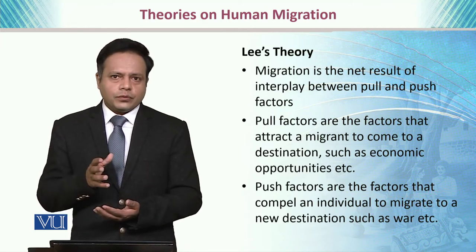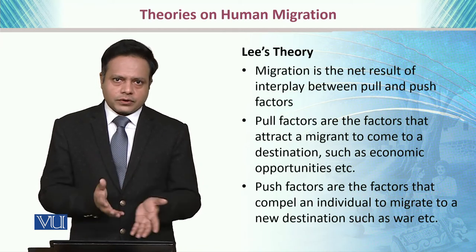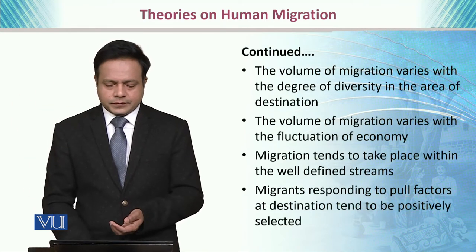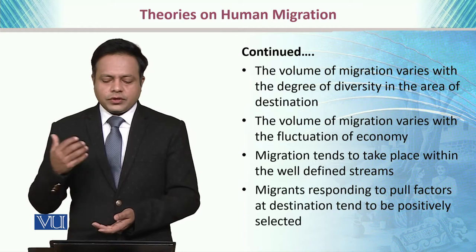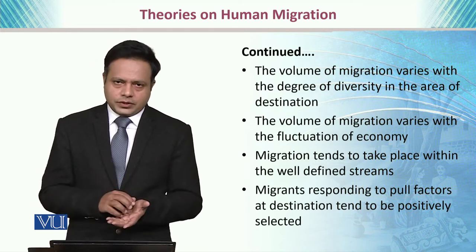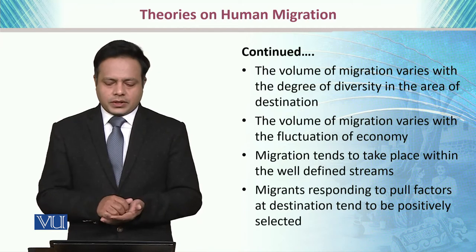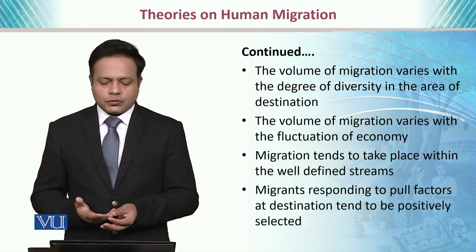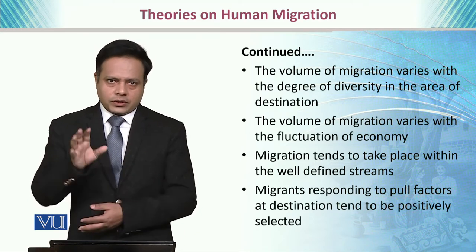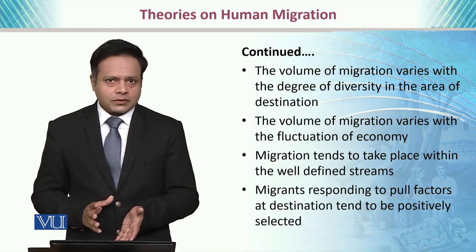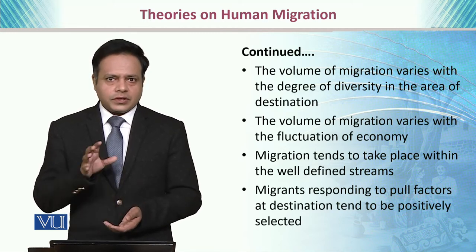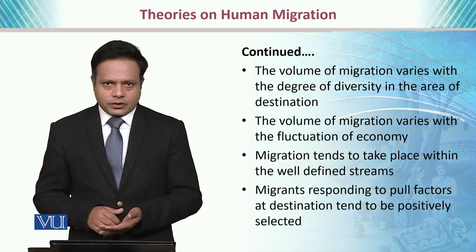For example, if you are finding it difficult to find water or food in a certain area, you tend to migrate to another area. The volume of migration varies with the degree of diversity at the destination — where there are more facilities, people tend to go there. The volume of migration also varies with the fluctuation of the economy, so it is not always fixed that people would always be migrating to a certain area.